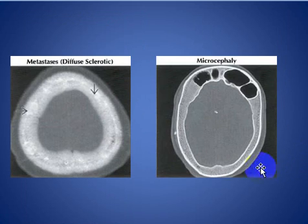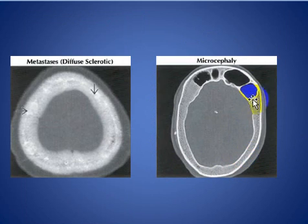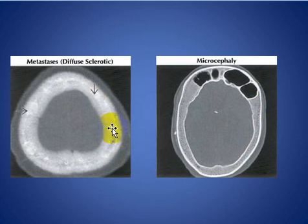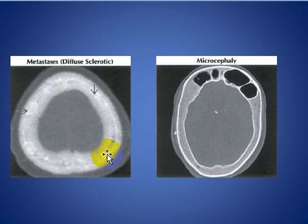Another cause is microcephaly. This patient has microcephaly with diffuse skull vault thickening. Here is another patient with diffuse sclerotic metastasis causing diffuse skull vault thickening.